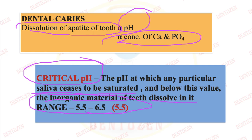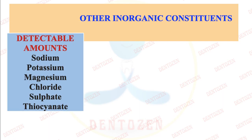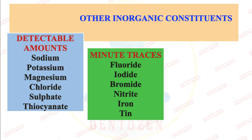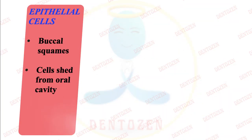When pH goes below critical pH, the carious process will start. Other inorganic constituents in detectable amounts include sodium, potassium, magnesium, fluoride, sulfate, and thiocyanates. In minute traces, there are fluorides, iodide, bromide, nitride, iron, tin, and other trace elements found in some samples like zinc, lead, copper, and chromium.